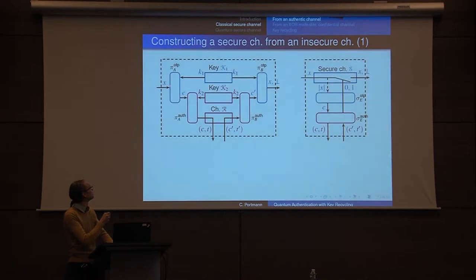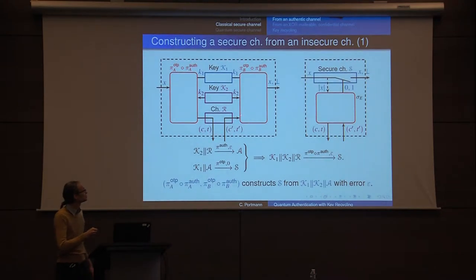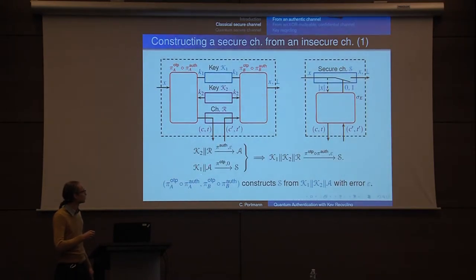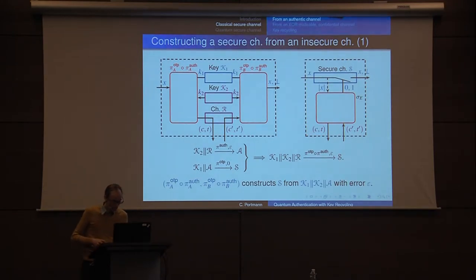These two parts of the protocol — the one-time pad and the authentic channel — we can view them as one composed protocol. It uses two keys and the insecure channel to construct a secure channel. Simply put: we use these resources to construct an authentic channel, and given an authentic channel, we construct a secure channel. The composition of the two protocols uses these resources to construct a secure channel.